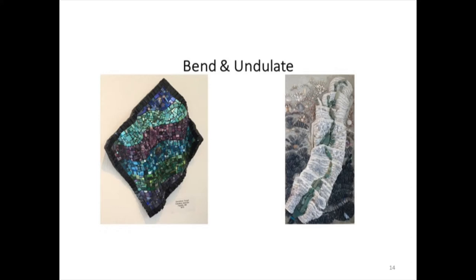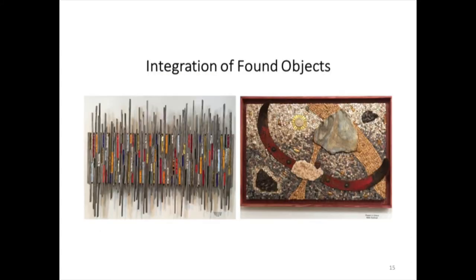Mosaics don't need to be flat. They can bend, they can undulate, and these are two examples of what they could look like. This is the integration of found objects — this one includes driftwood and glass, and the one on the right includes rusted old tools that are put together with natural stones.